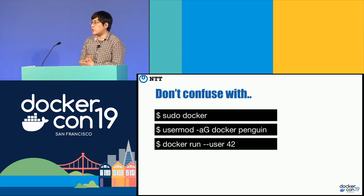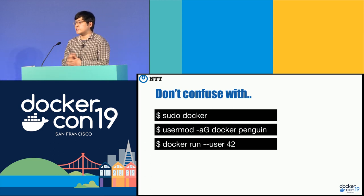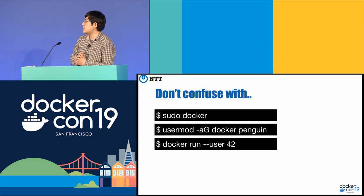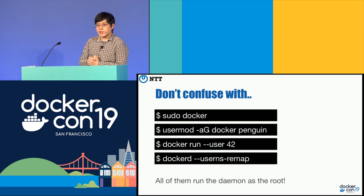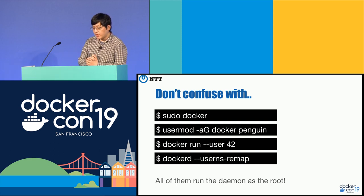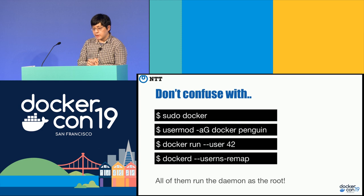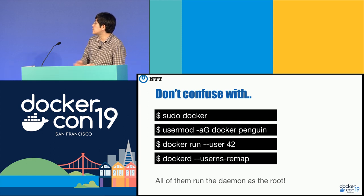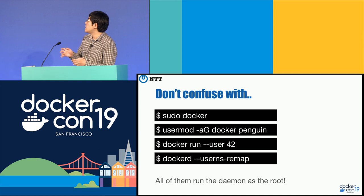There's also 'docker run --user' with some user ID, so you can execute containers as an unprivileged user. But Docker daemon is still running as root. And there's also 'dockerd --userns-remap', so you can map users using user namespaces and execute containers as unprivileged users. But Docker daemon is still running as root, so this is also vulnerable to potential vulnerabilities in Docker daemon.